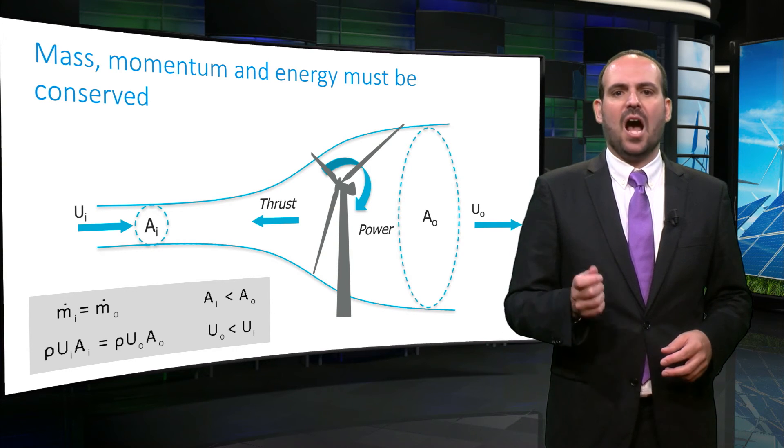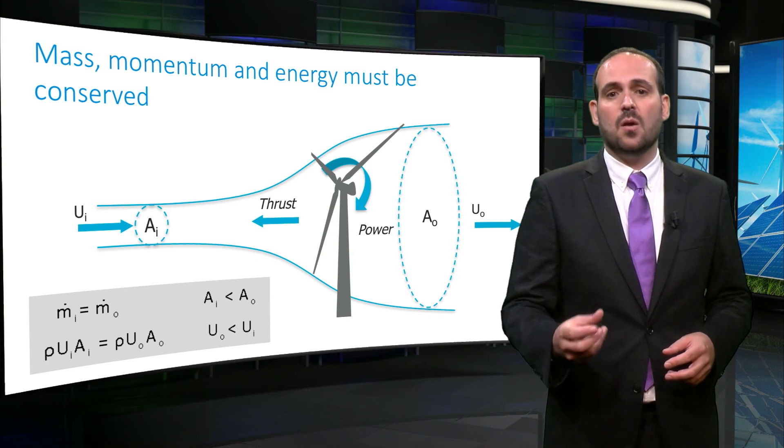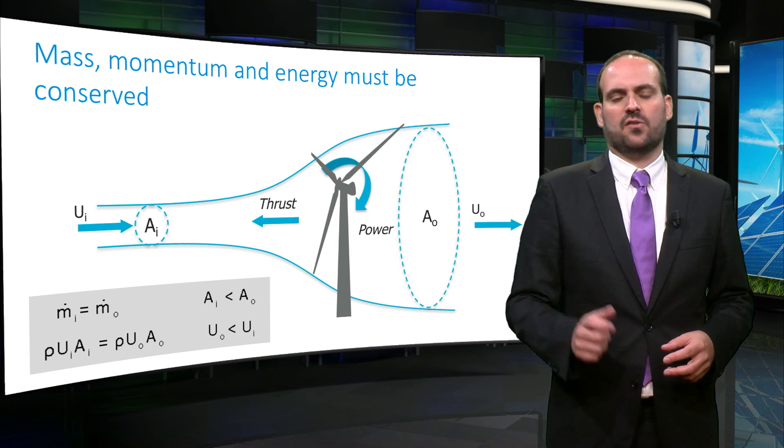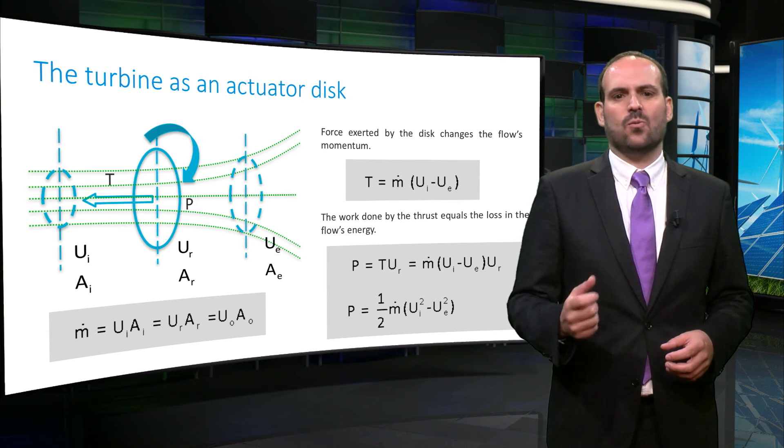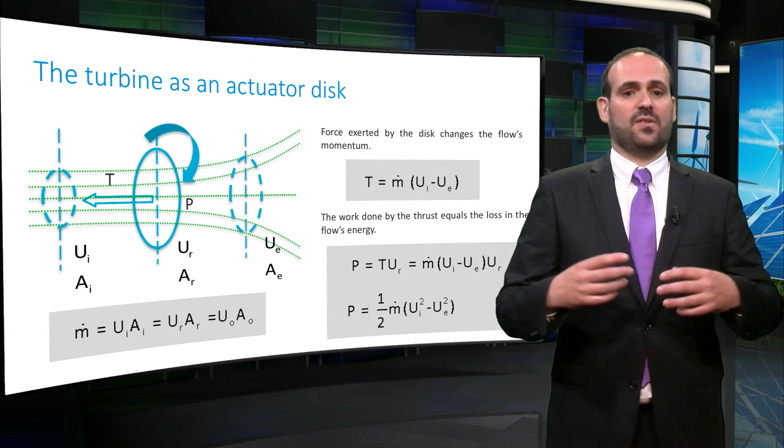The first rule to determine how much energy we can extract is to define that mass, momentum, and energy must be conserved along our stream tube. We can also think of the wind turbine as an actuator disk of area A, which uniformly decelerates the flow.